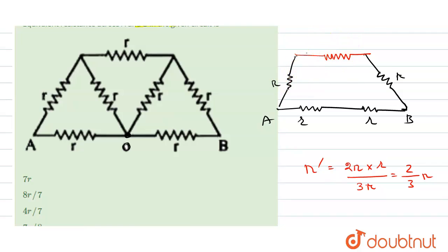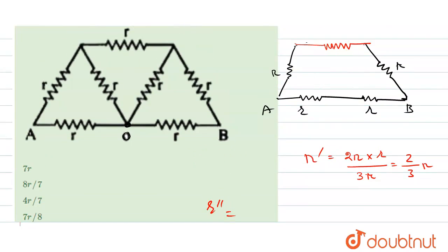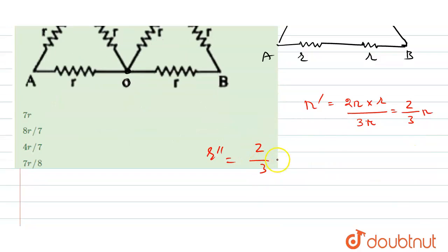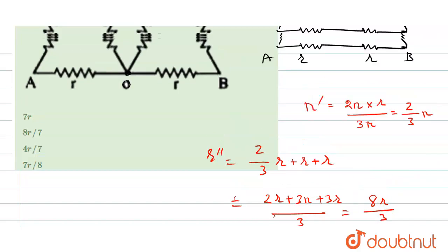So this tree, we have to suppose, equivalent resistance between this tree, will be 2 by 3R plus R plus R plus R, so it will be 2R plus 3R plus 3R divided by 3, so it will be 8R by 3.